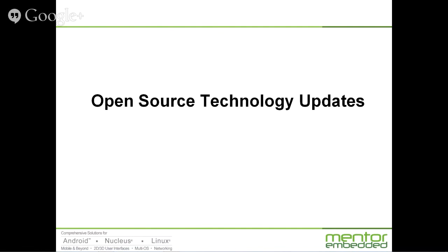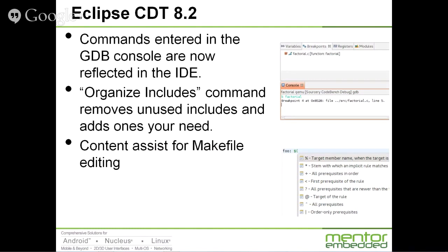In terms of open source technology updates, some of the updated bits we're including in Sourcery CodeBench — the big one from an IDE point of view is the Eclipse CDT 8.2 project. One highlight is that commands you enter in the GDB console are now reflected in the IDE. It's the best of both worlds: you can get a GUI view of everything, like an instant list of your breakpoints, but you can also go right to the GDB console and set a breakpoint just the way you always have, and both are now tied together so changes in one place are updated in the other.